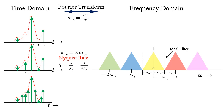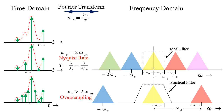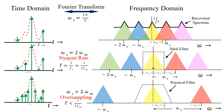Designing an ideal filter with such a sharp cut-off is not possible practically, so ideal filters are not realizable. Practical filters can be used to recover the signal provided there is some gap between the spectras. When omega_s > 2*omega_m, this is known as oversampling, and the sampling interval T < 1/(2*fm). When the sampling rate is low, spectras overlap and it is not possible to recover the original spectra. This is termed undersampling, where omega_s < 2*omega_m and the sampling interval T > 1/(2*fm).